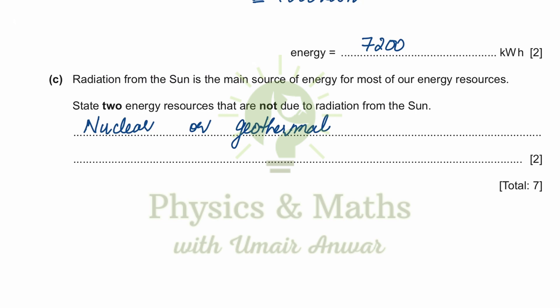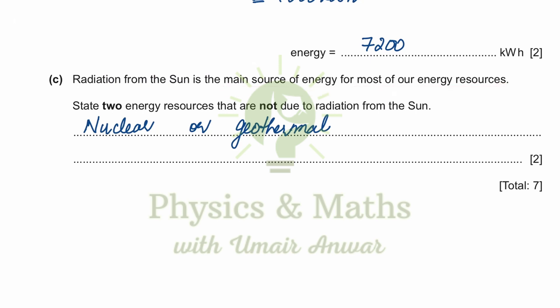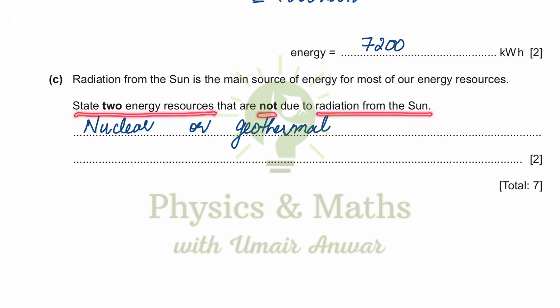To clarify: radiation from the sun is the main source of energy for most resources — such as solar electricity, wind, and crops through photosynthesis and food. But the two energy resources that are not due to radiation from the sun are nuclear energy, specifically nuclear fusion, and geothermal energy.